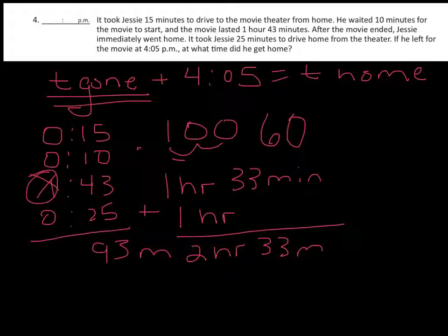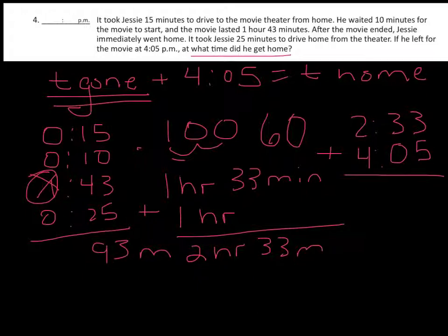Now the problem asks what time did he get home. So what did we say in our original problem? We said that the time he was gone plus the time he left will tell us what time he got home. He was gone 2 hours and 33 minutes, so we can just plug that in, 2 hours 33 minutes plus the time he left, which is 4:05, and that's going to tell us the time he got home, and that gives us 6:38. So we got 6:38 and the problem tells us it is p.m.